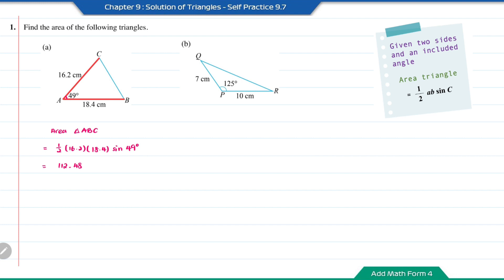Question B: in triangle PQR, we also have two sides and one included angle. So the area will be 1 over 2 times 7 times 10 times sin 125 degrees. The answer is 28.67 cm².